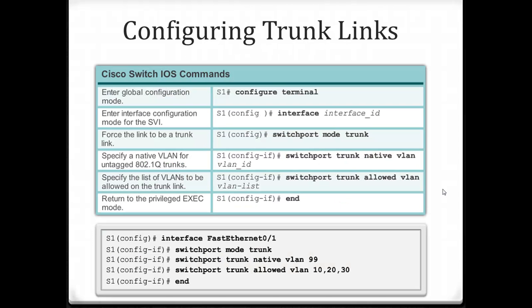To configure a trunk link, go into the interface and use the command 'switchport mode trunk'. Previously we used 'switchport mode access' to make an access port; now 'switchport mode trunk' makes it a trunking port. Whenever we set up a trunking port, we want to assign the native VLAN number — that native VLAN sends all untagged traffic over the trunk link. Optionally, we can set the list of allowed VLANs over those trunk links; by default, all VLAN traffic is allowed.